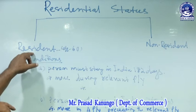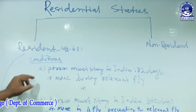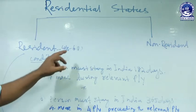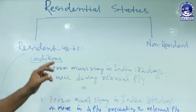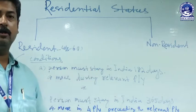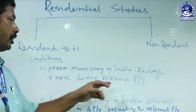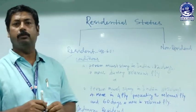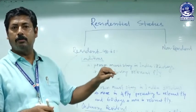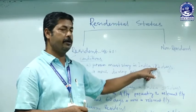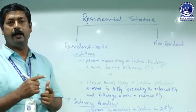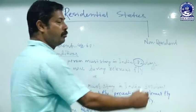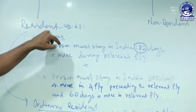If the assessee is to be treated as a resident, they must fulfill any one of two conditions under Section 6, clause 1. The first condition: the assessee must stay in India for a period of 182 days or more during the relevant current previous year. For example, if the relevant current previous year is 2019–2020, the assessee must stay in India for a minimum of 182 days from 1st April to 31st March. If so, their residential status is treated as resident.